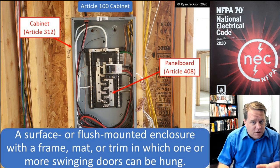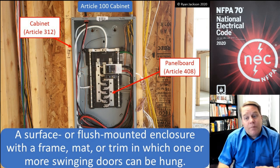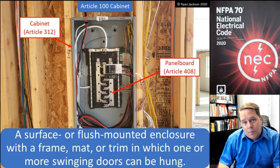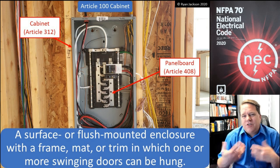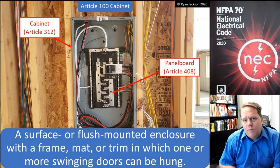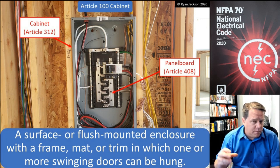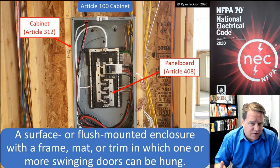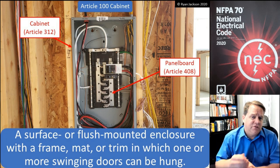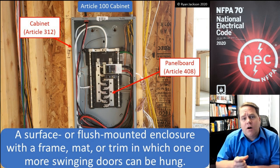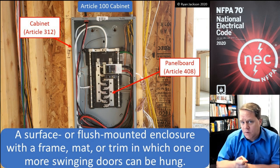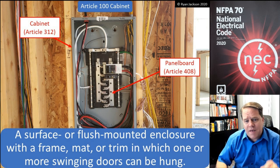A couple of definitions here — cabinets and cutout boxes. It's really not worth talking about one without talking about the other. They're both regulated in Article 312, which covers cabinets, cutout boxes, and meter socket enclosures.